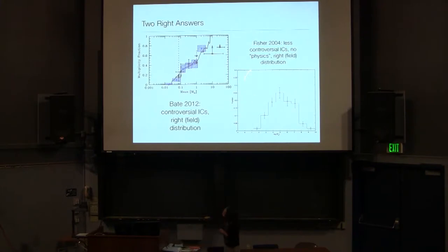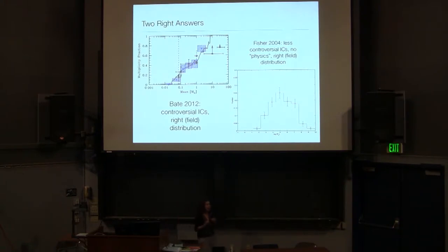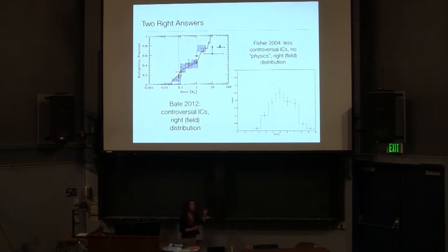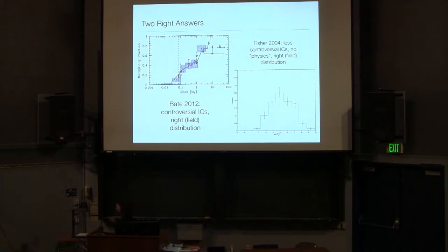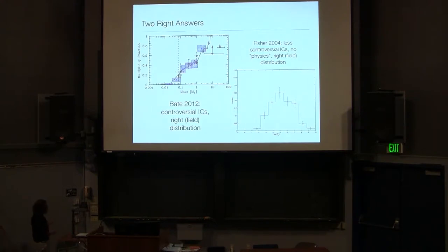On the other hand, we have models like those of Fisher 2004, who has taken the opposite approach. He said: let me take what the observers give us in terms of what these cores look like and how much angular momentum they have, and then without worrying about radiation transport, magnetic fields, hydrodynamic turbulence, or disk formation — if I just apply some efficiency factors for the mass division and angular momentum division of these cores — what do I get out? He also reproduces the field population of binaries this way. I want this to be a warning: just because you put in either a lot of physics or the right initial conditions and get out the right answer, doesn't mean you've solved the problem. We have to be very cautious about this as numericists.